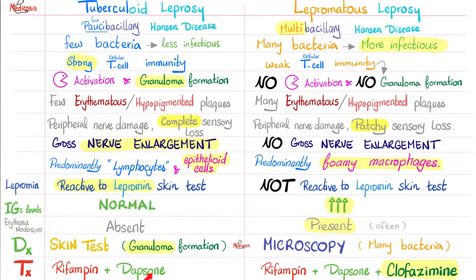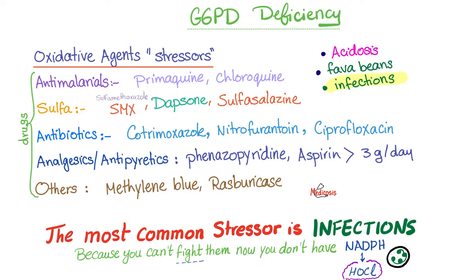Knowing that, what do you think is the most common cause of treatment failure? The answer is medication noncompliance. Try doing the same habit every day for 12 months — it is very difficult. Where have you heard of dapsone before? It is one of the medications that can trigger hemolytic anemia if you have G6PD deficiency disease.